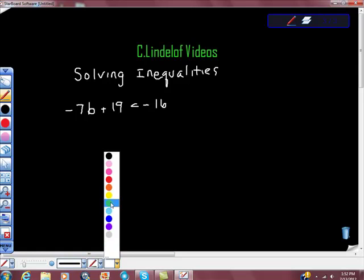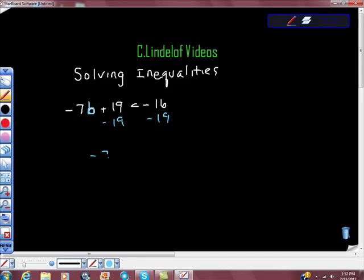So, I'm going to solve this like it's a regular equation. I'm going to try to get b by itself here. First thing I'm going to do is add negative 19 to both sides, negative 19 to both sides to get negative 7b is less than negative 35. Right, negative 35.